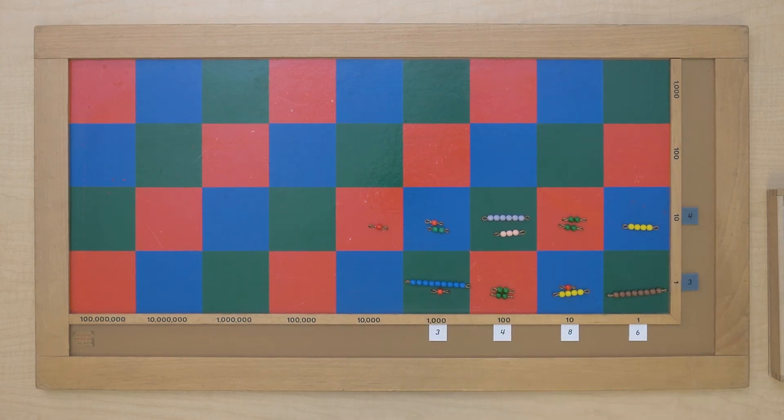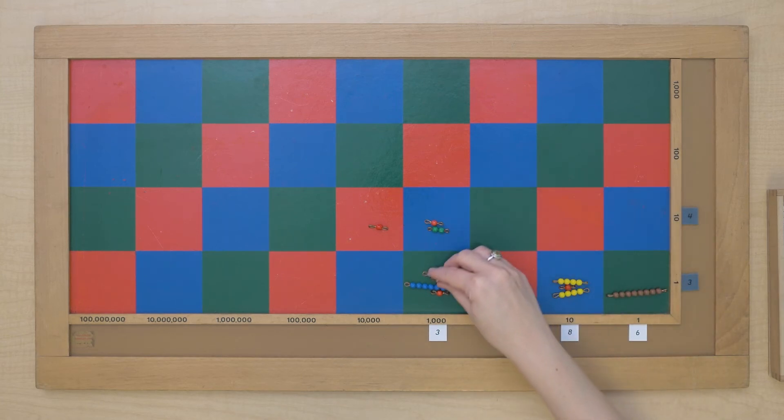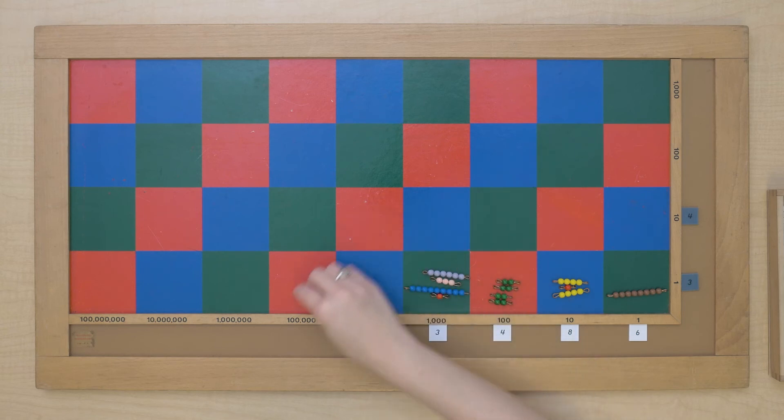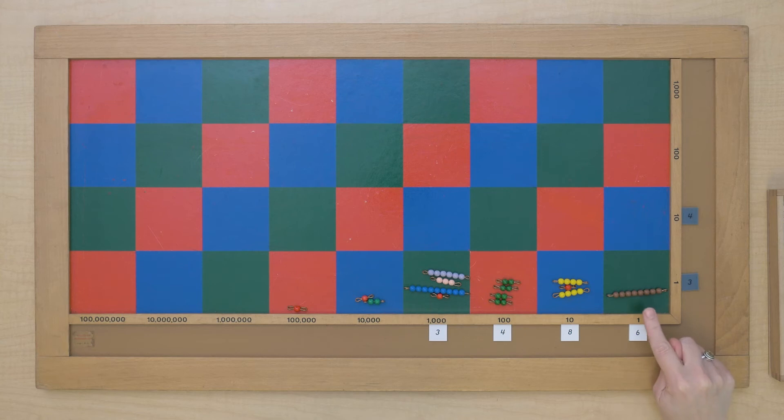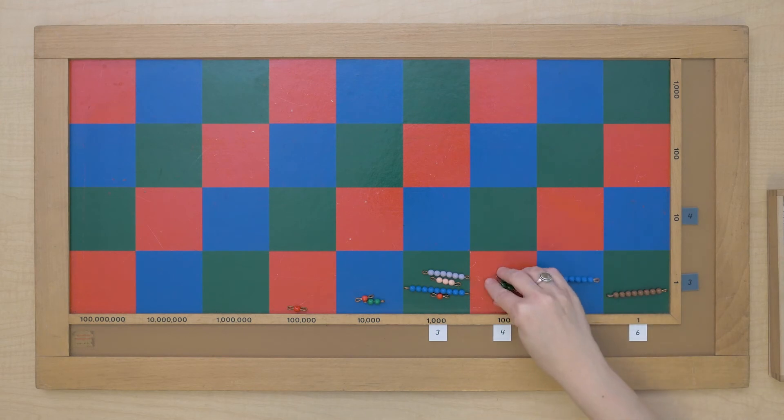Well, we've completed our multiplication. Now we can do the slide to start determining our product. We need to give only one bead bar in each square. So that one's okay. I need to add this up. And that's 9,268.